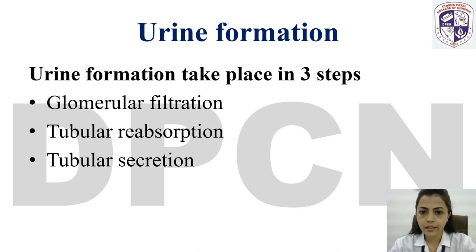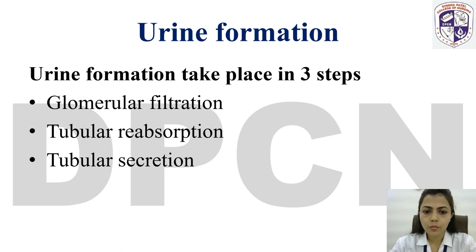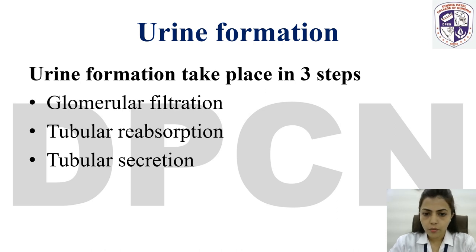So a kidney is the excretory organ of the body which removes the waste from the body and it forms the urine. Urine formation takes place mainly in three steps: glomerular filtration, tubular reabsorption and tubular secretion. The kidney has millions of nephrons which act as the functional unit of the kidney and which produce the urine and filter the blood.